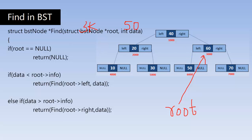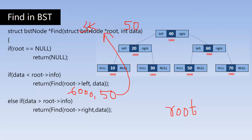If root equals null — no, root is not null because it has 60. If data is less than root arrow info — is 50 less than 60? Yes it is. Now I call this function recursively again. Root arrow left is the address of the left child, which is 6000. I pass 6000 and data 50 to the same function.